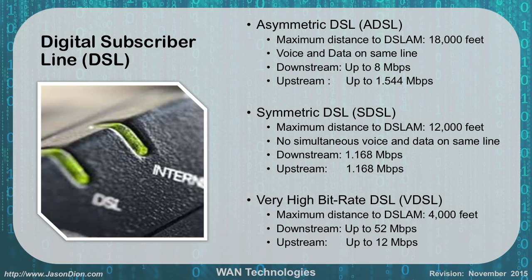Very high bit rate DSL required you to be within 4,000 feet — less than a mile — from the provider. The downstream was up to 52 megabits per second, with upload at 12 megabits per second. Why different upload and download speeds? The majority of users do a lot more downloading than uploading. If you think about your average day on the internet — watching videos, downloading content from Facebook, receiving emails — all of that is download. Having a faster download speed gave a better customer experience.